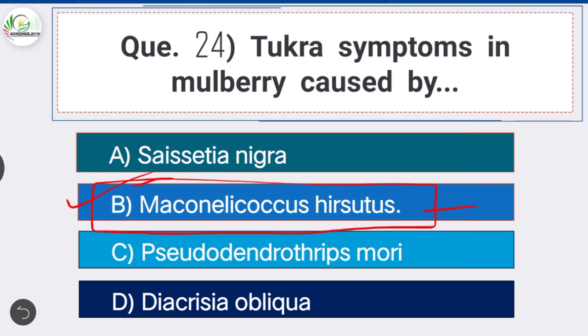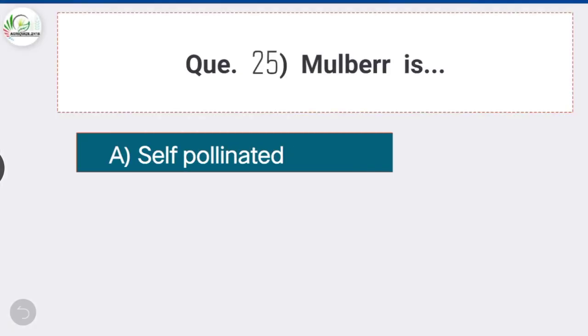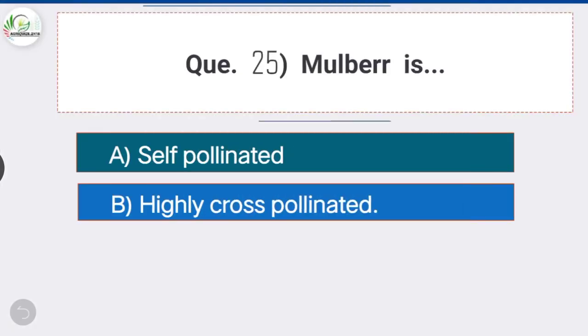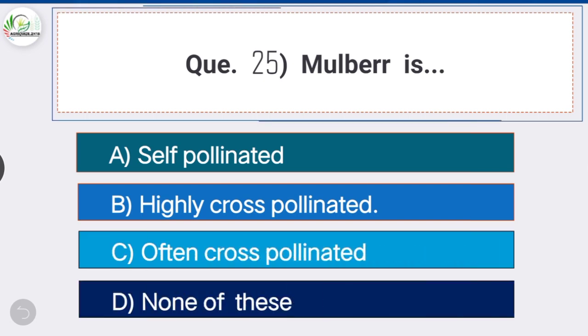Question number twenty-five: mulberry is — option B is the correct answer — highly cross-pollinated. Mulberry is highly cross-pollinated.